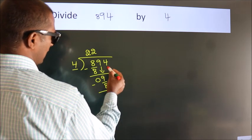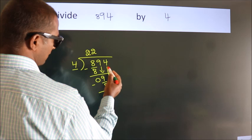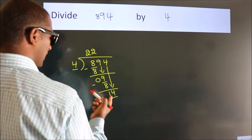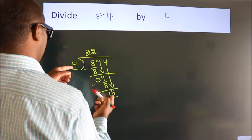After this, bring down the beside number. So 4 down. So 14, a number close to 14 in the 4 table.